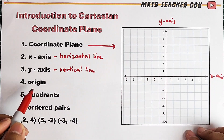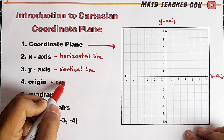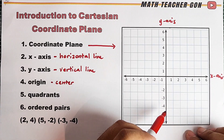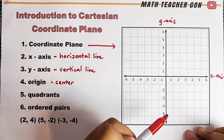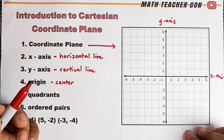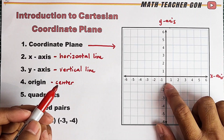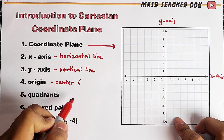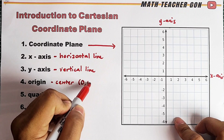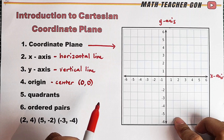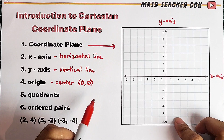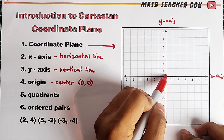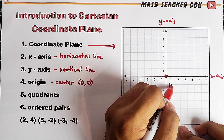And that brings us to the fourth terminology, which is the origin. This is the center of the Cartesian coordinate plane. It is also the place where both the x and y-axis meet. Since this is the center and the intersection of the two axes, the coordinates or the exact location of the origin is at (0, 0). Let me plot it — here is the exact location of the origin, which is (0, 0).